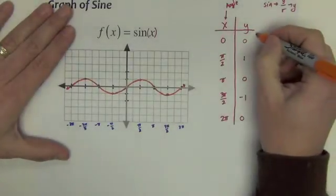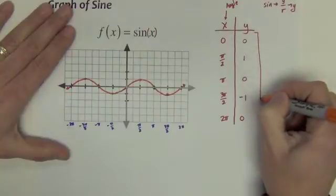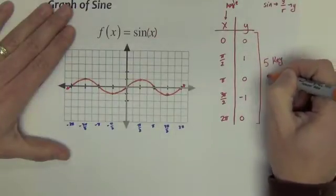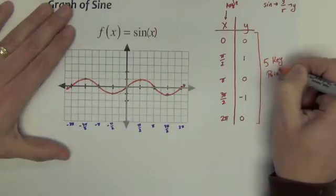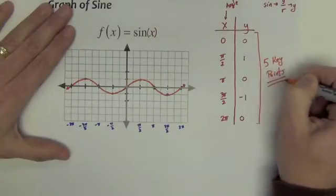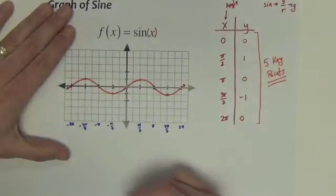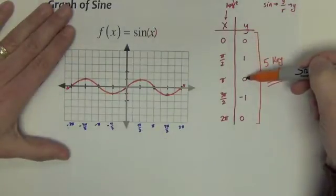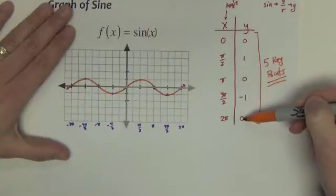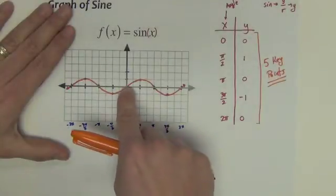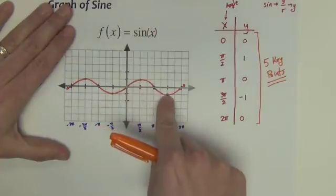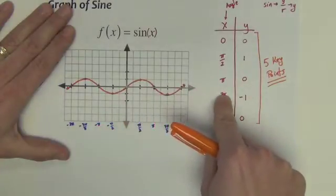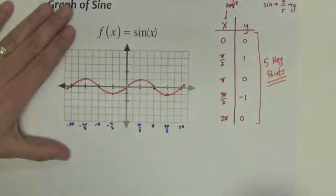So there's your sine curve. It's basically knowing these kind of what I call five key points. I know these five points and we can plot a sine graph. Essentially it starts at the origin and goes up 1, back to the 0 line, down 1, back to the 0 line. It would continue up 1, back to 0, down 1, back to 0, and just kind of keep doing that.